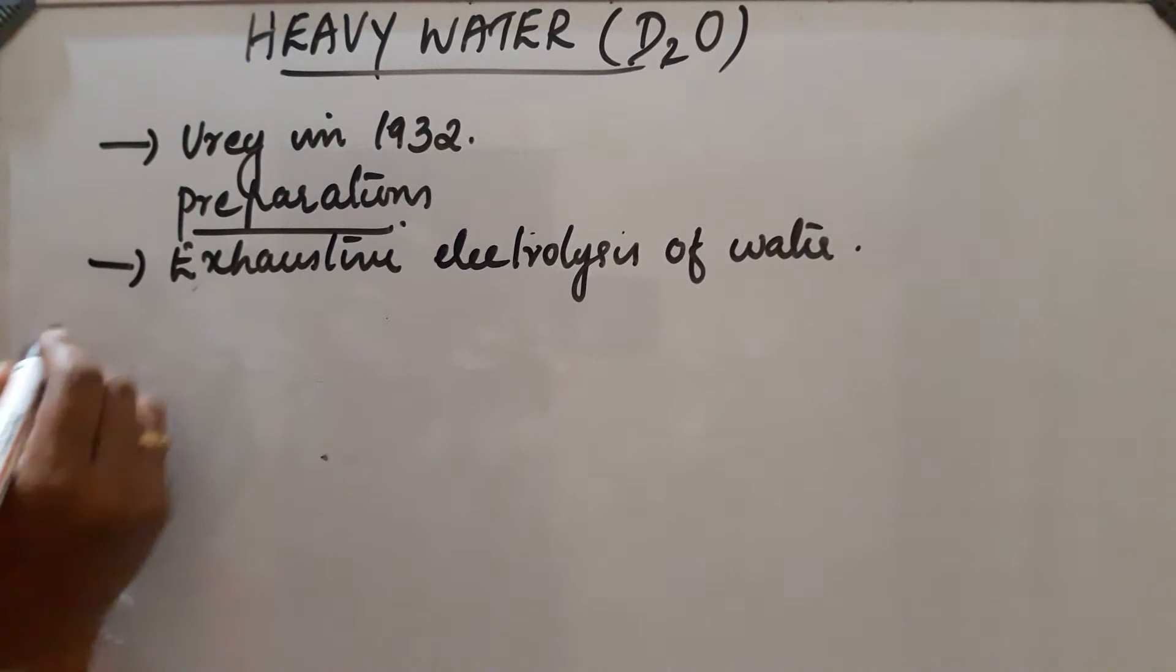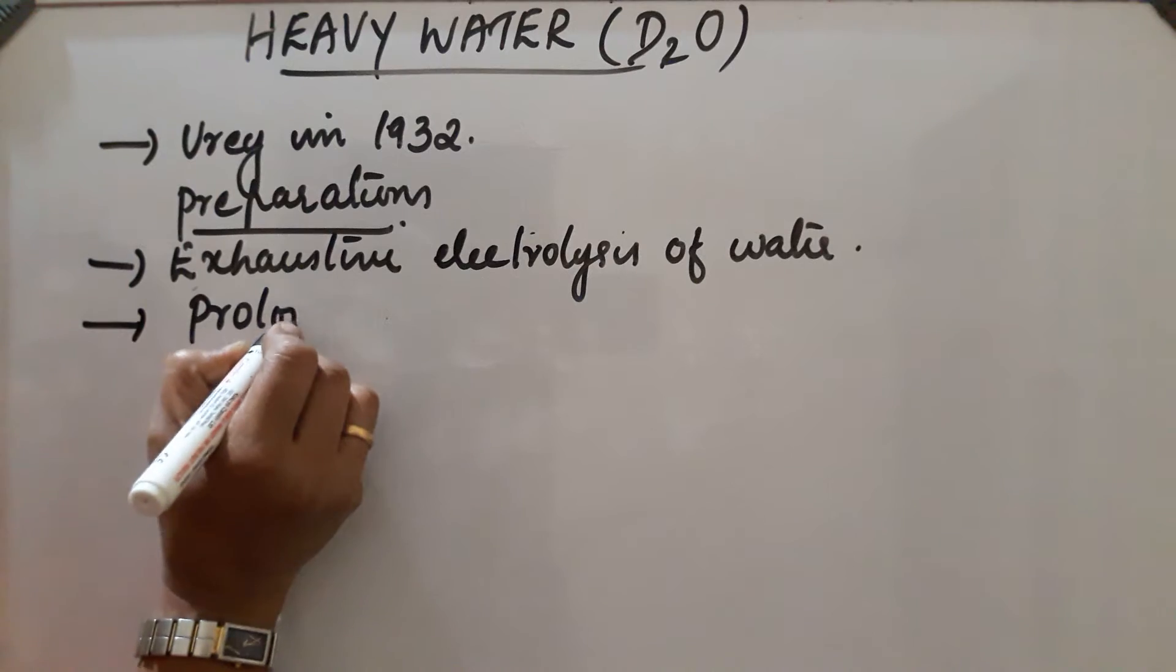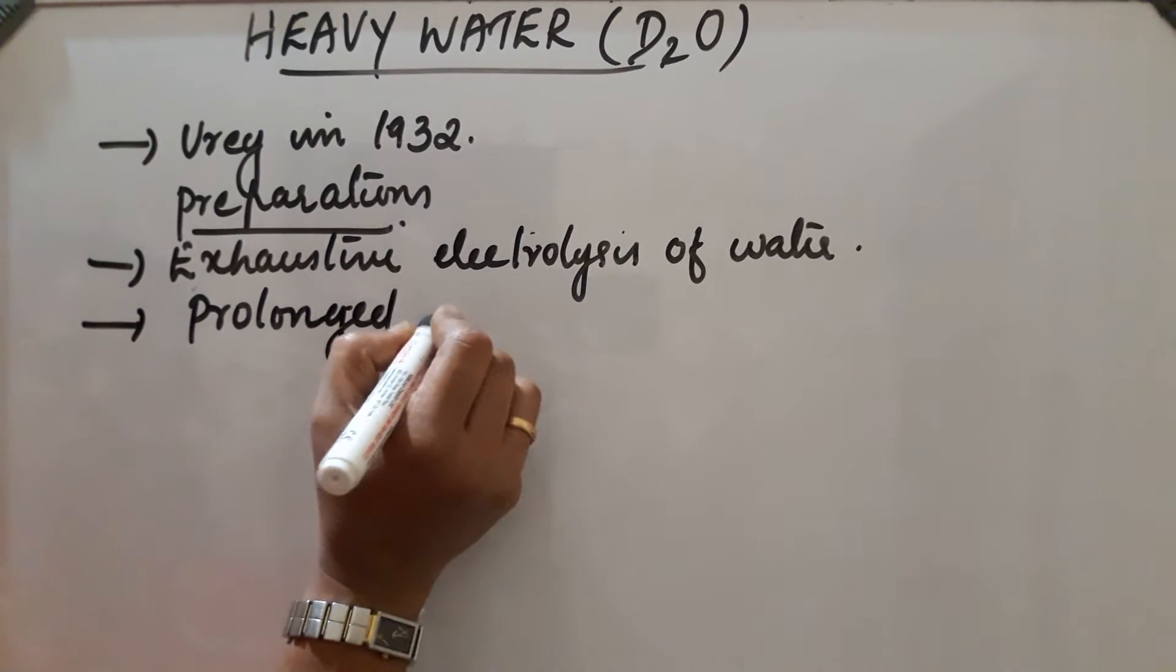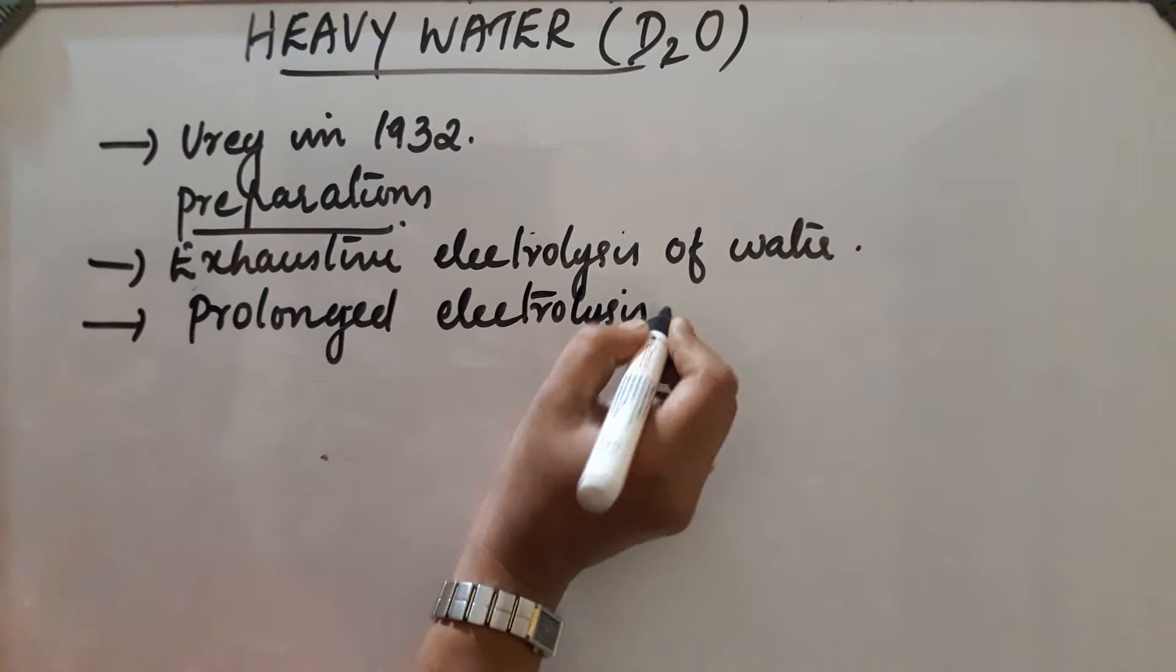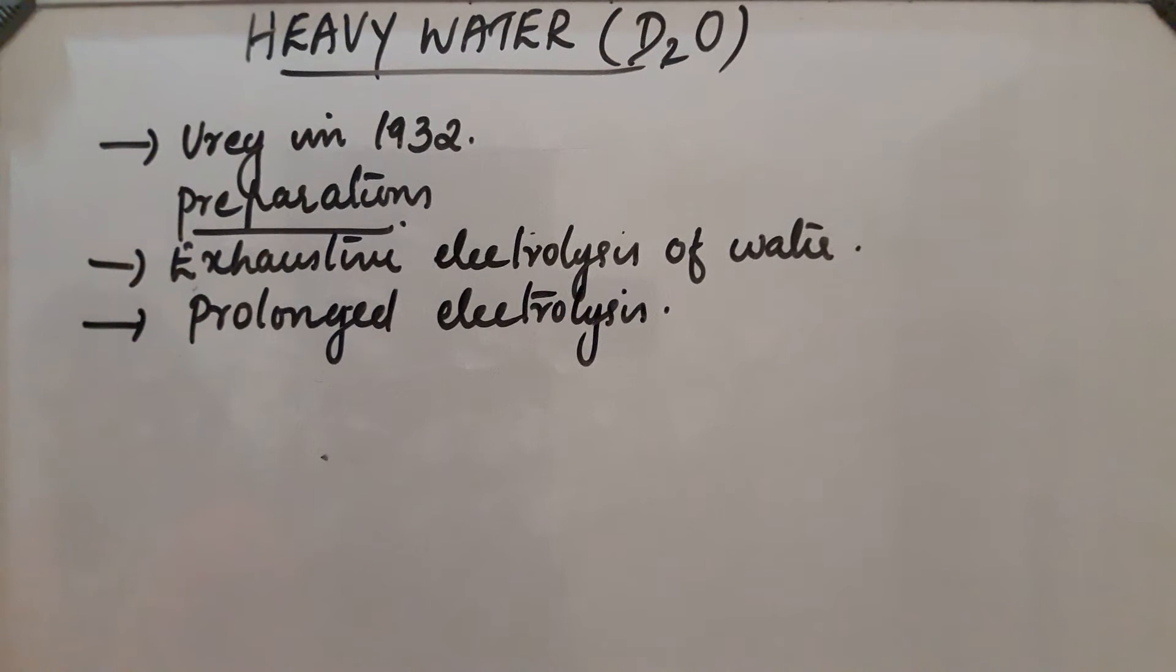On prolonged electrolysis, we can obtain D2O. H2 gas is easily liberated more than D2, and the remaining water is enriched with D2O.